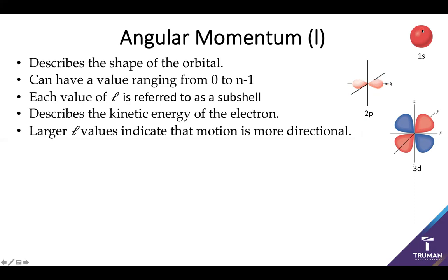One of the other key features is it describes the kinetic energy of the electron. The larger the l, the faster the electron is moving side-to-side. We see this in terms of directional movement. If l is zero, even in all directions. If l is one, it moves side-to-side in one direction.